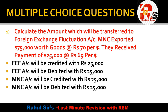The first question is about foreign exchange fluctuation account. MNC exported goods worth $75,000 at the rate of Rs.70 per dollar. They received payment of $25,000 at the rate of Rs.69 per dollar. The options are: FEF account will be credited with Rs.25,000; FEF account will be debited with Rs.25,000; MNC account will be credited with Rs.25,000; or MNC account will be debited with Rs.25,000.